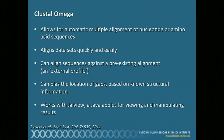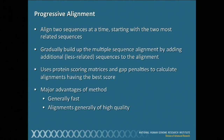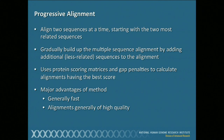At a 30,000-foot level: Clustal Omega uses a progressive alignment approach. You start with your input set and the method figures out which sequences are most related to each other. It aligns the two most related sequences first, then keeps building out from there. It starts with the easy alignments, builds out, and when you get to the more divergent sequences, so much of the set has already been aligned that it makes the harder alignments easier. It builds from most related to least related. Advantages: generally fast, and you get really good quality alignments.